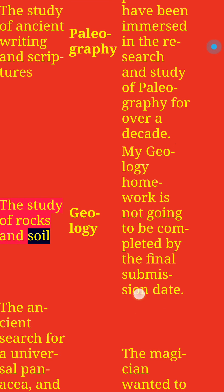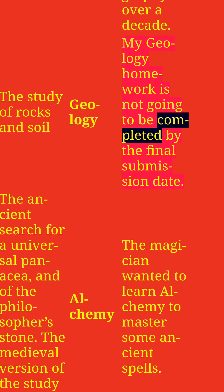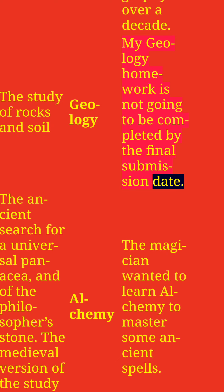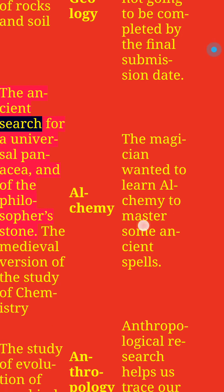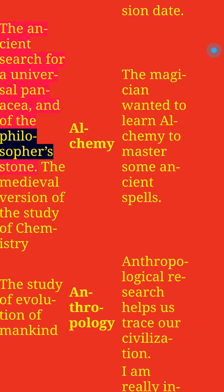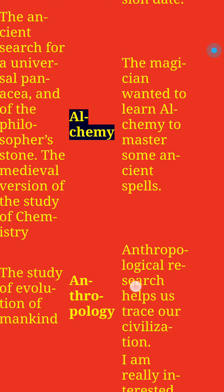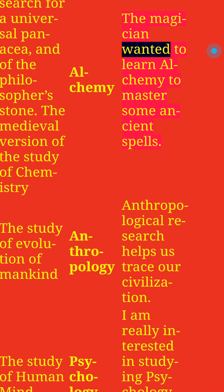The study of rocks and soil: Geology. My geology homework is not going to be completed by the final submission date. The ancient search for a universal panacea and of the philosopher's stone — the medieval version of the study of chemistry — is called Alchemy. The magician wanted to learn alchemy to master some ancient spells.